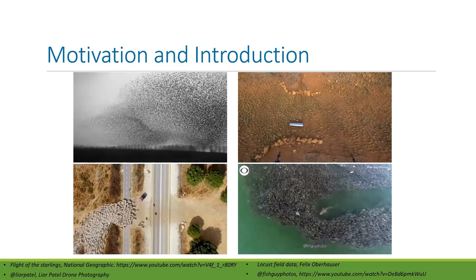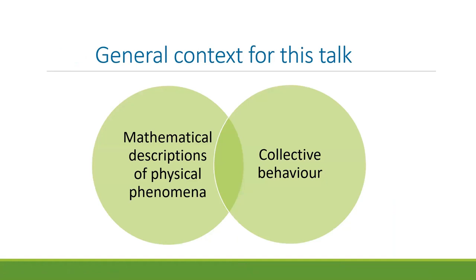Some motivation for why we care about this: locusts can influence the food supply of 10% of the world's population, so being able to control and manipulate the movement of locusts is a reasonably important problem to solve in science. For starlings, maybe practically it's not so important, but from a biological perspective understanding why they behave — the mechanisms for flocking and things like that — is the underlying biological motivation.